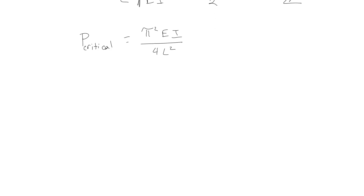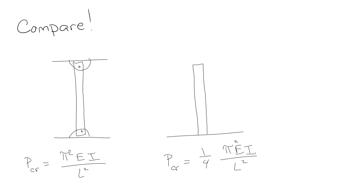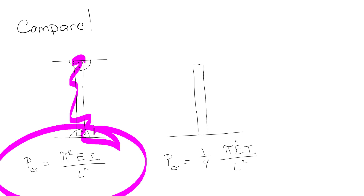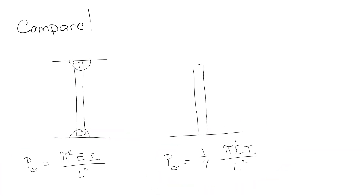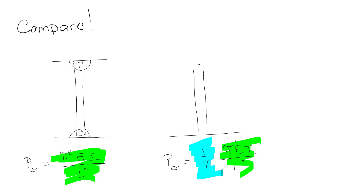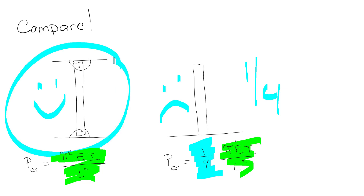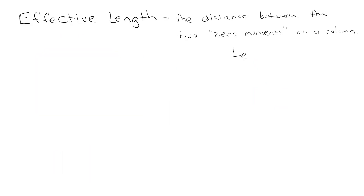Showing the two cases side by side: if it's pinned at top and bottom, the critical load is π²EI/L²; if it's fixed at the bottom and free at the top, the critical load is π²EI/4L². So a fixed-free column can only support one-fourth of the load of a pinned-pinned column. The combination of two pins actually makes it stronger than just one fixed end.